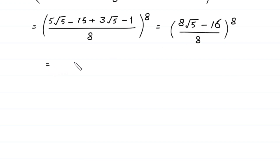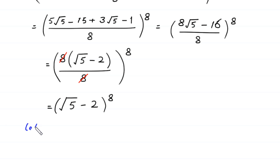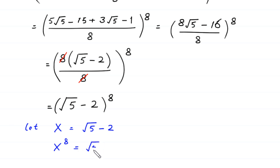Next, the 8 cancels with the 8, leaving (square root of 5 minus 2), whole to the power 8. So we have (square root of 5 minus 2) to the power 8. Now let x equal square root of 5 minus 2, so x to the power 8 equals (square root of 5 minus 2) to the power 8.